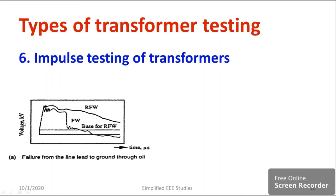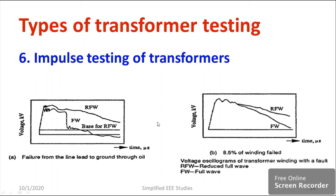That is a failure — so we are looking at output voltage versus time. If you see these kinds of waveforms, there is a problem in the transformer oil — a failure from line lead to ground through the oil. Similarly, consider another example: FW stands for full wave impulse, and RFW stands for reduced to full wave. If you get these kinds of waveforms, it indicates that approximately 8.5% of the winding insulation has failed.